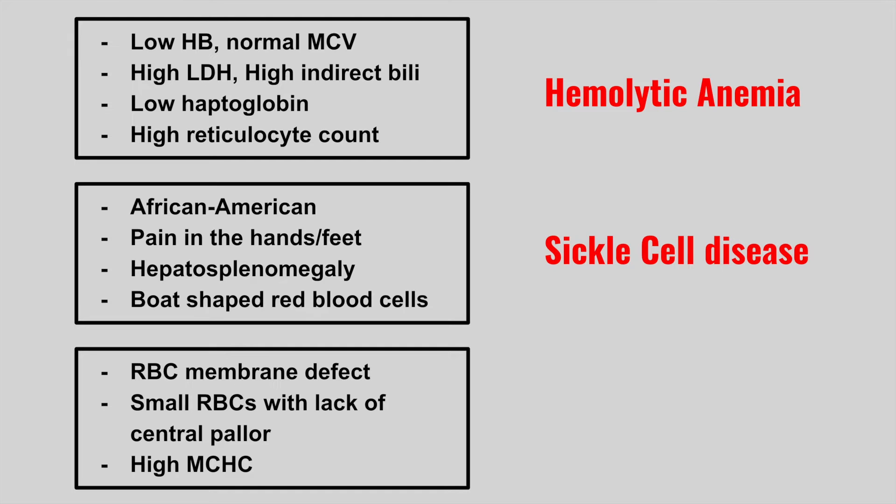Because of autosplenectomy, patients with sickle cell are at risk of infection from three major pathogens: Strep pneumo, Haemophilus, and Neisseria — so make sure to vaccinate. Also look out for Salmonella osteomyelitis. Many complications — dactylitis, acute chest syndrome, and strokes — are all due to vaso-occlusion.